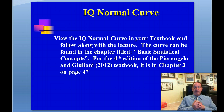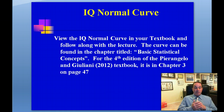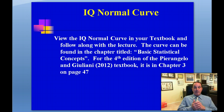The curve can be found in the chapter titled Basic Statistical Concepts. For the fourth edition of the Perangelo and Giuliani textbook, it's chapter three on page 47 — you'll see the IQ normal curve. It's also on a handout that I've probably given you, so take a look at the handout. You should have in front of you now the IQ normal curve diagram.